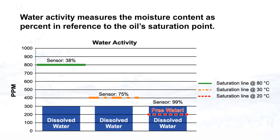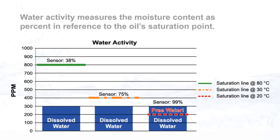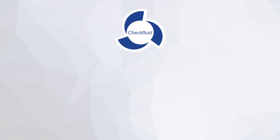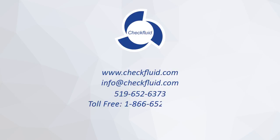Water activity measures the moisture content as a percent in reference to the oil's saturation point. The example shows the same oil at 20, 30, and 80 degrees Celsius, and how the saturation point varies with temperature changes. At 20 degrees Celsius, the gearbox has produced free water, where the same oil at 80 degrees has a relatively low moisture content. PPM measurements do not reflect these changes. With the use of water activity measurements, the operator is alerted to the problem, and corrective actions can be taken before it is too late.